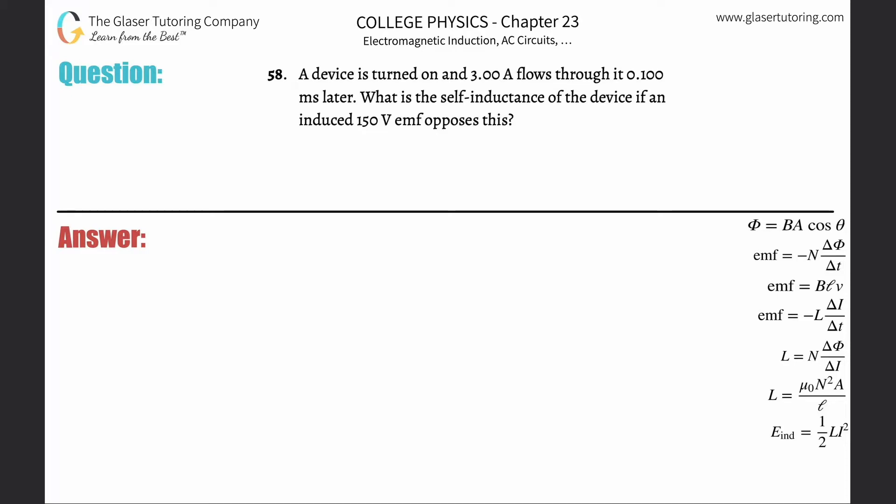Number 58: A device is turned on and 3 amps flows through it in 0.1 milliseconds later. What is the self-inductance of the device if an induced 150 volt EMF opposes this?